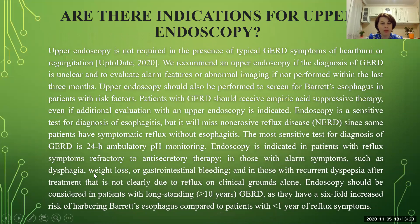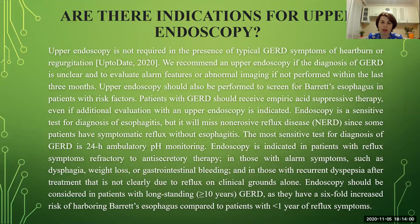Regarding indications for upper endoscopy: not every patient with GERD needs to be referred, as it is an invasive procedure that is not easy for adult patients, older patients, or patients with neurosis or cardiovascular disorders including hypertension, angina, post-infarction state, or severe heart failure. Upper endoscopy is not required in the presence of typical GERD symptoms of heartburn and regurgitation. It is recommended when the diagnosis is unclear, when alarm features are present, when abnormal imaging has been found, or if it has not been performed within the last three months. It should also be performed to screen for Barrett's esophagus in patients with risk factors as a complication of GERD.